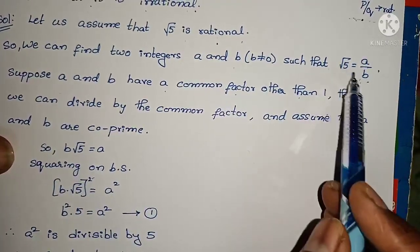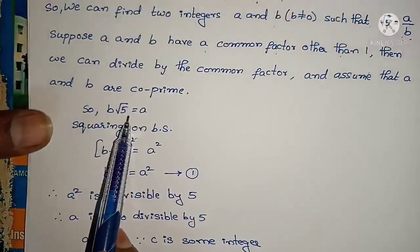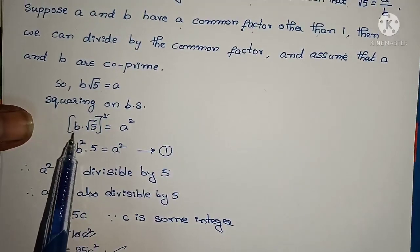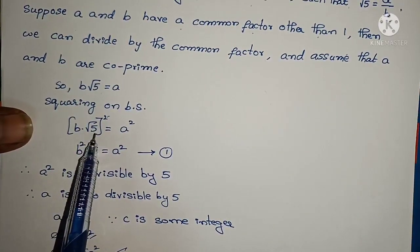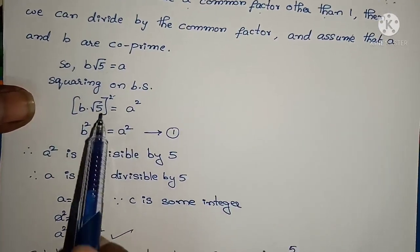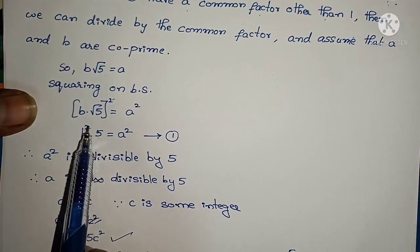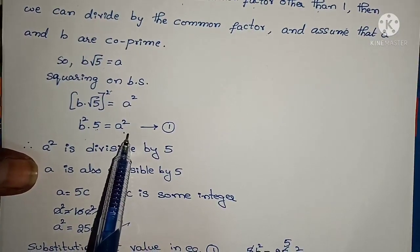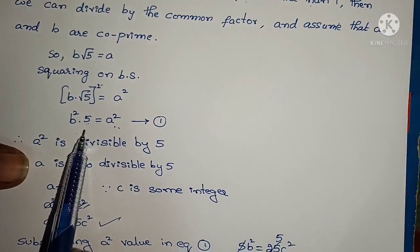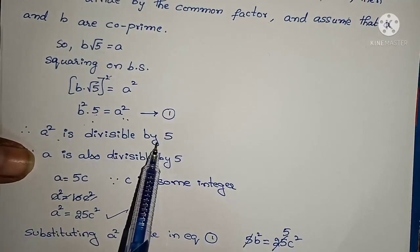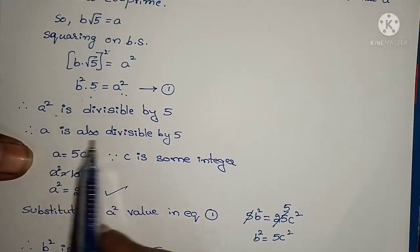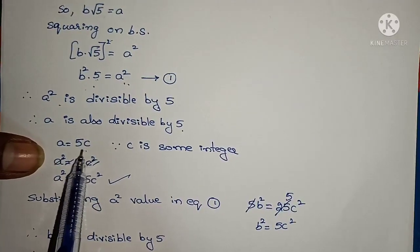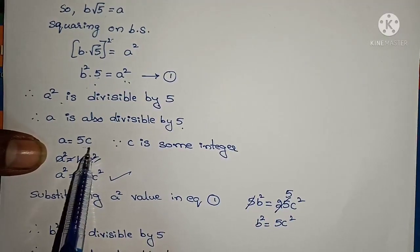Cross multiplying, b × root 5 = a. Squaring on both sides: (b × root 5)² = a², which gives 5b² = a². By this, we can say a² is divisible by 5, and if a² is divisible by 5 then automatically a is also divisible by 5.